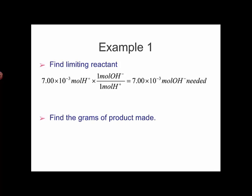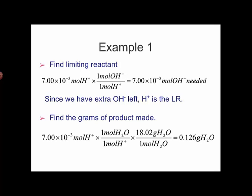Therefore, I start with that to figure out the moles and then the grams of water made. So I start with the limiting reactant. I use the stoichiometry of the net ionic equation. It's one mole of water for every mole of H-plus reacted. 18.02 grams of water per mole. 0.126 grams of water will form in this reaction.